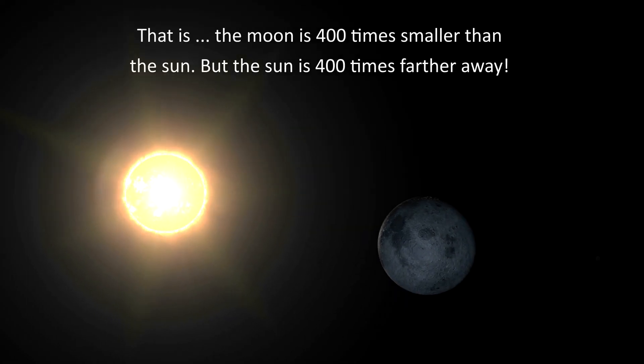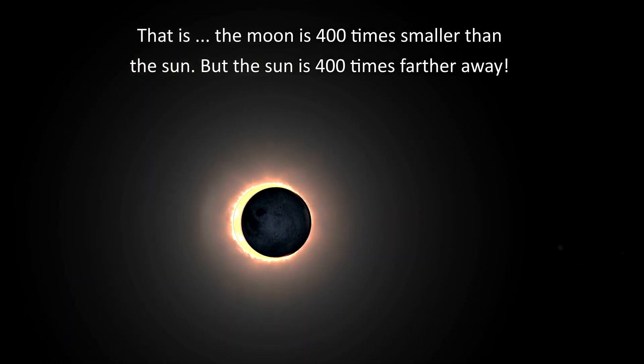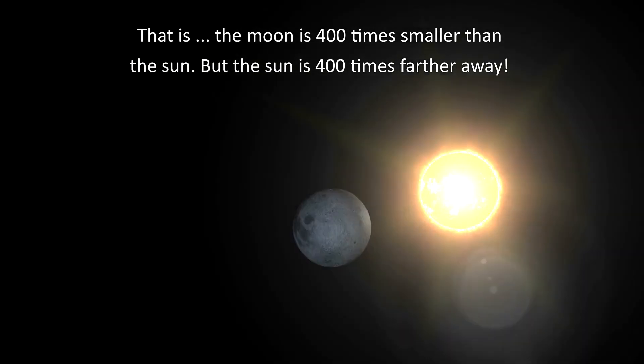Total solar eclipses happen because of an amazing coincidence. That is, the moon is 400 times smaller than the sun, but the sun is 400 times farther away.